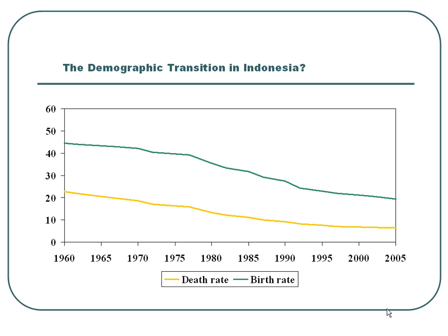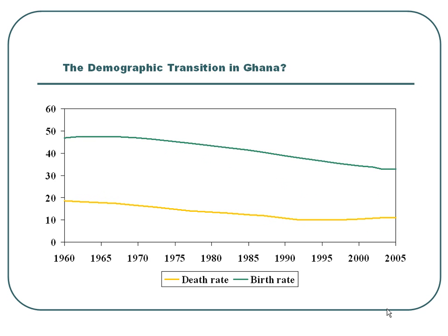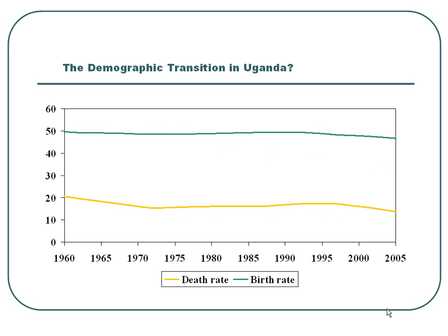However, if we look at a country like Ghana, we find that although the death rate falls to a similar level as the other countries, the birth rate has remained higher — falling a bit, but still with a fairly rapid rate of population increase. And if we look at Uganda, we see that the birth rate has remained even more persistently high.